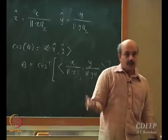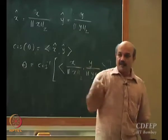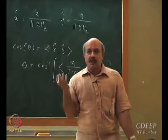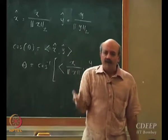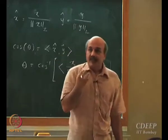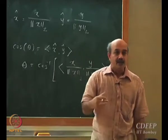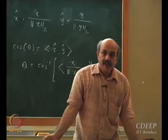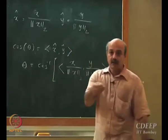The inner product space could be any set of objects, like the set of continuous functions over an interval. When you study undergraduate mathematics, you encounter orthogonal functions and orthogonal polynomials. Why are they called orthogonal? Because there is an underlying inner product space, and the inner product defined on it allows us to define the concept of angle between two vectors — vectors meaning elements of the vector space, which could be continuous functions.